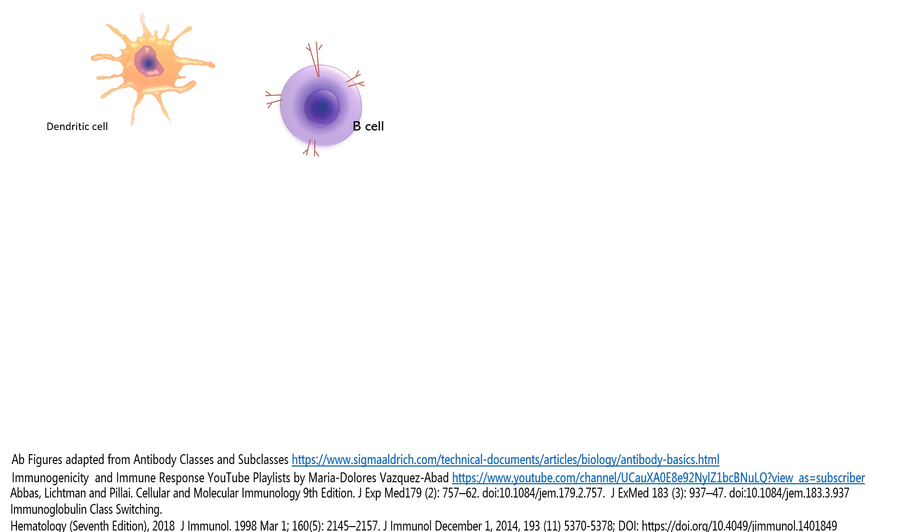Dendritic cells and B cells can identify antigens, process them, and present the T cell epitope to the T cell, which will be differentiated into a TH2 with the appropriate co-stimulatory signal from the antigen presenting cell.